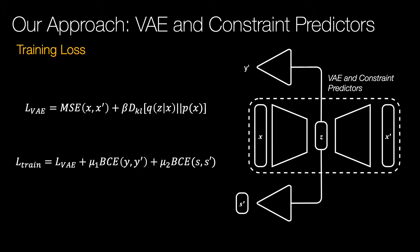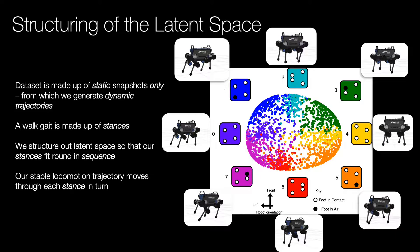More precisely, the training loss is constructed by summing the VAE loss and the binary cross entropy, which minimizes the error between the stability and stance target and prediction. The VAE loss is a mean squared error reconstruction summed with a KL divergence between the prior and posterior distributions. The training loss encourages structure in the latent space so that consecutive stances in the walk gait are in sequence in the latent space.